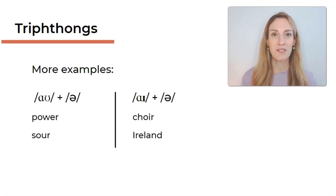And then we also have examples for aɪ plus ə, for example, choir, and Ireland. The first word is a group of people singing together, and the second word of course is the country next to England.